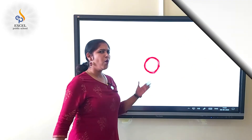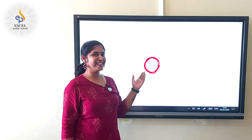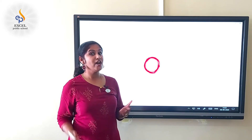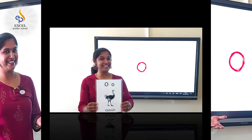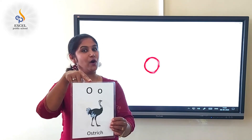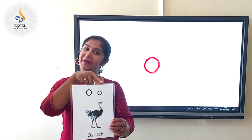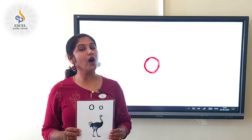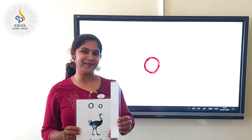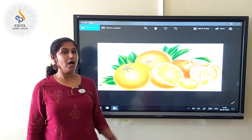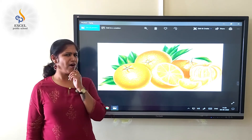Did you all enjoy the rhyme? That's great! What is this, children? Hmm, this is number zero — but we are doing a letter today. This is letter O. This is mama letter O and this is baby letter O, and it makes the sound: O, O, O, O, O, O. Ostrich! O, O. Orange, Orange, Orange.